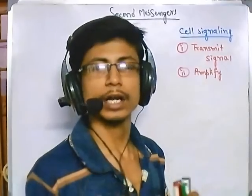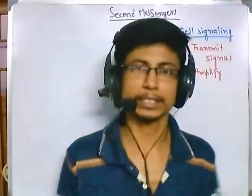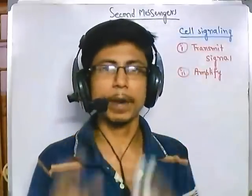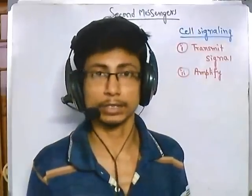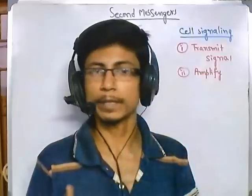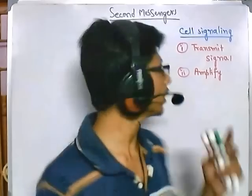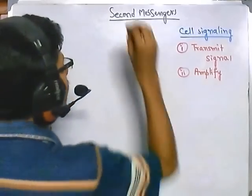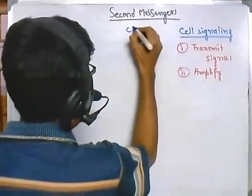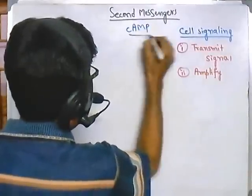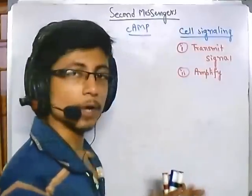Both transmission and amplification are equally important. In the case of second messengers, they are part of internal cell signaling processes. There are first primary messengers, secondary messengers, and also tertiary messengers present. One example of a second messenger is the cyclic AMP molecule.